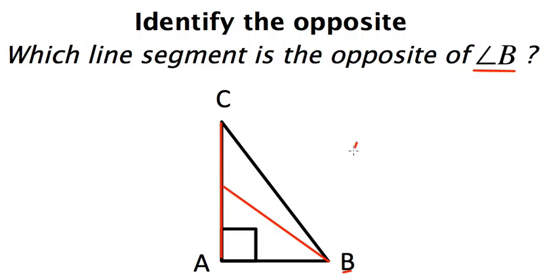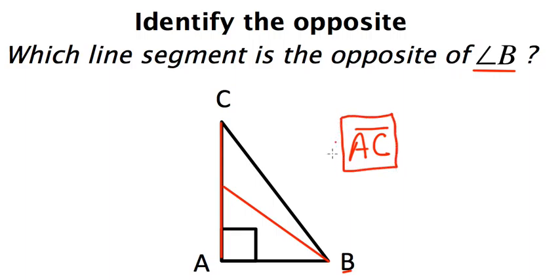So in this particular case, line segment AC is opposite angle B.